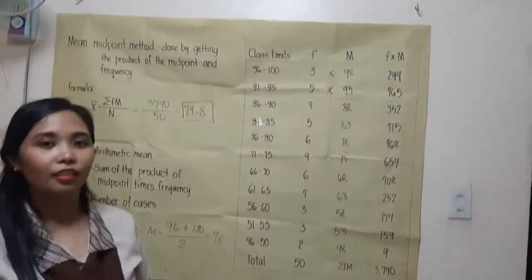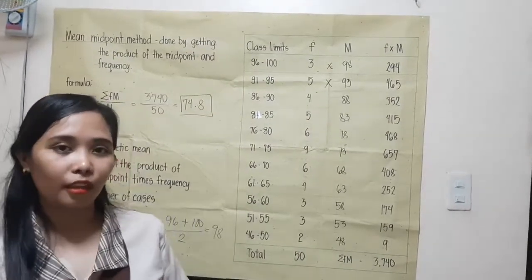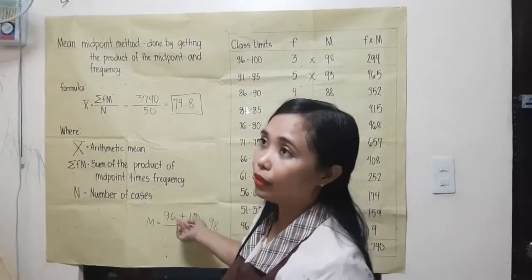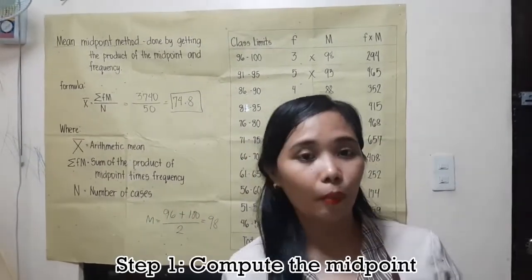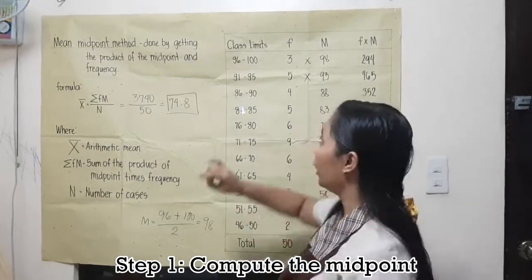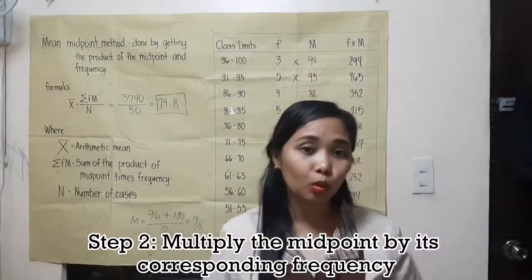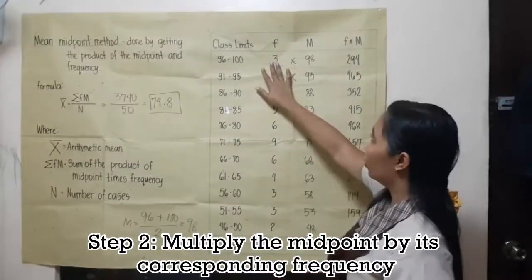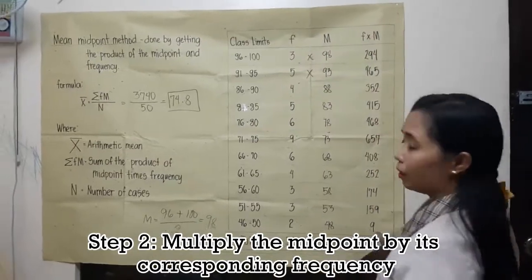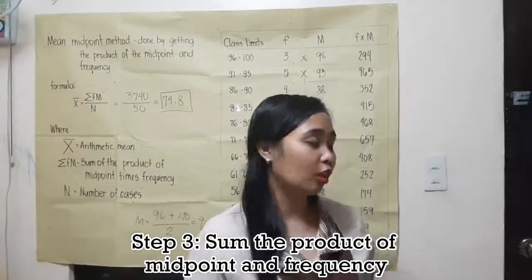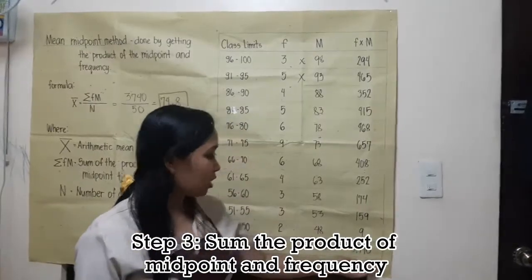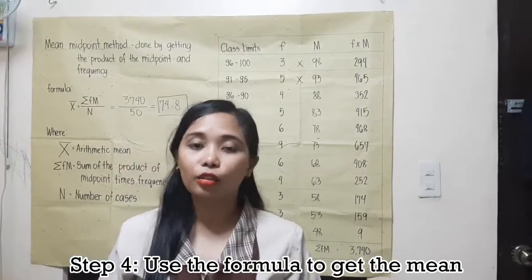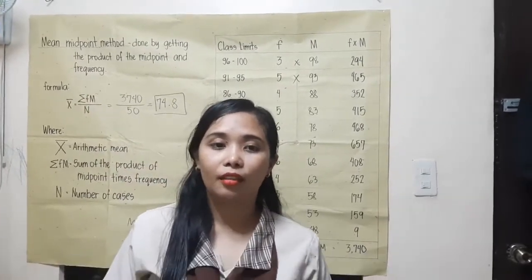So, 74.8 is the mean of our group data. To summarize, to get the mean using the midpoint method: Step 1, get the midpoint. Step 2, multiply the midpoint by its corresponding frequency. Step 3, get the summation — the sum of all products of frequency and midpoint. And the last step, use the formula to get the mean.